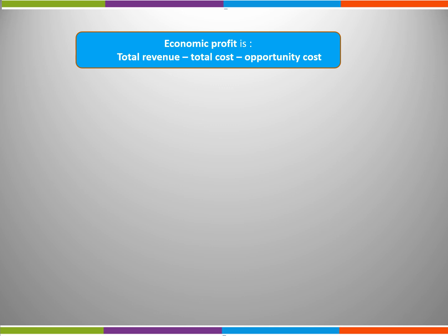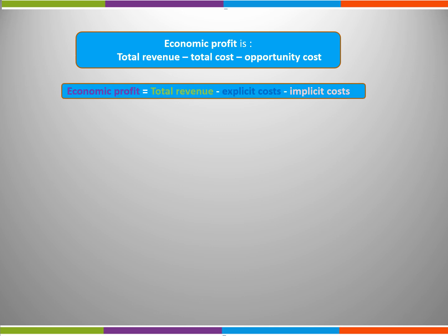Economic profit is total revenue minus total cost minus opportunity cost. If we use our new terms for total cost and opportunity costs, we have a new formula: total revenue minus explicit costs minus implicit costs. This takes into account both the monetary cost and the opportunity cost.